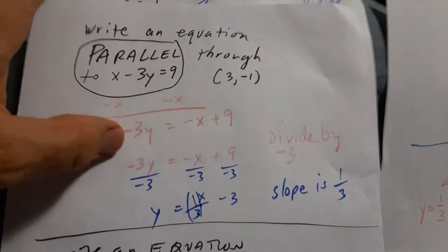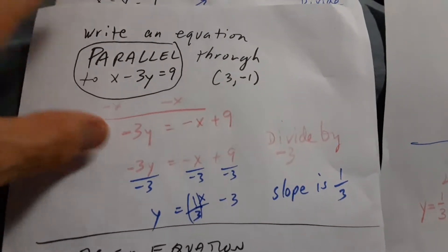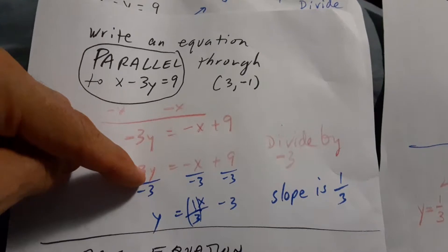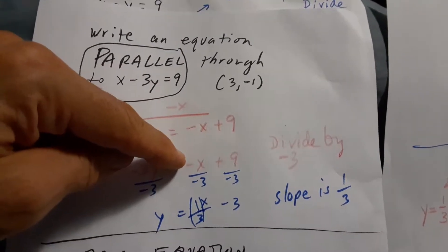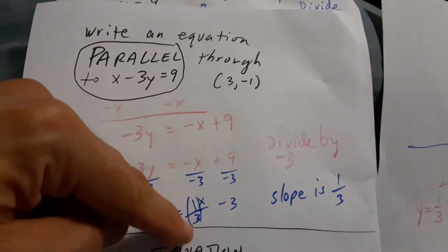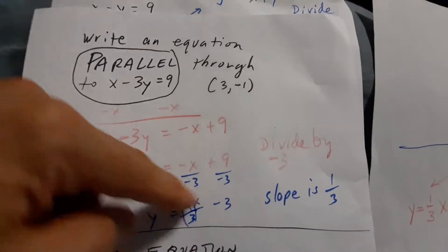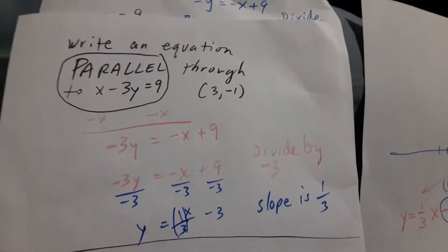Now, I'm going to divide by negative 3, so that I just get the y. So I got negative 1x divided by negative 3, which gives me a one-third slope. That's why I say the slope is one-third.